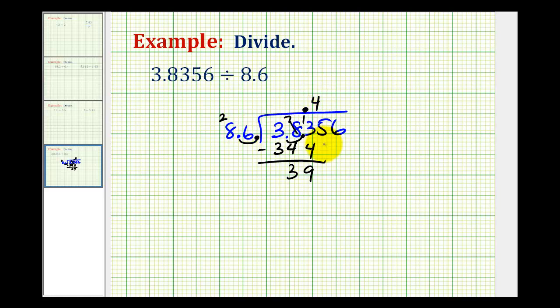And now we bring down the next digit and now we want to know how many 86's there are in 395. Well 4 times 86 was 344. I think that'll work again. Let's try the 4. Again 4 times 86 is 344 the same as last time.